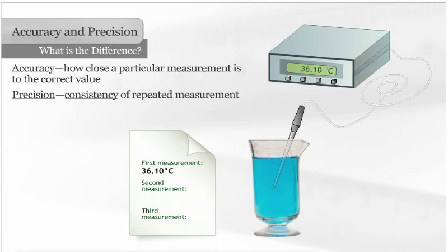Precision is the consistency of repeated measurement. In other words, are the results consistent each time something is measured? The more consistent the results, the more precise the measurement.